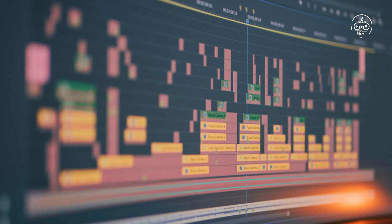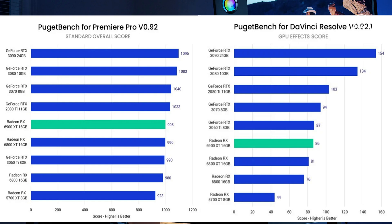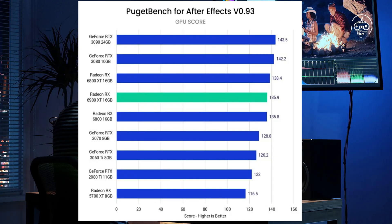Summary — VRAM requirements for motion design and compositing workloads. Baseline requirements: a GPU with 6 to 8GB of VRAM. Examples: GTX 1660 Super, RTX 2060 Super. For moderate 3D rendering and GPU-accelerated plugins: a GPU with 8 to 11GB of VRAM. Examples: RTX 3060, RTX 3070. For heavy 3D rendering and GPU-accelerated plugins: a GPU with 11 to 24GB of VRAM. Examples: RTX 3080 Ti, RTX 4090.